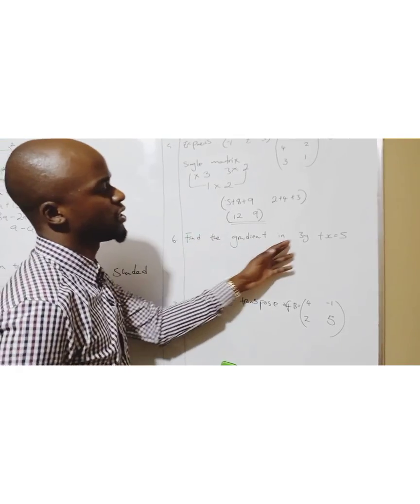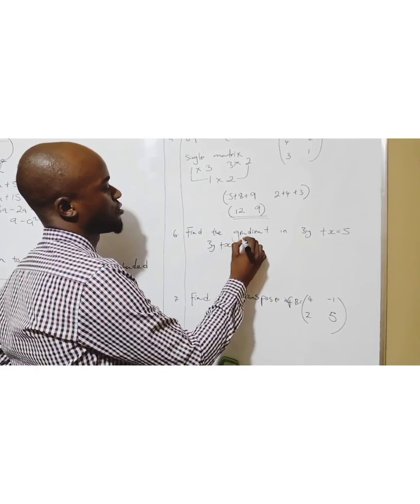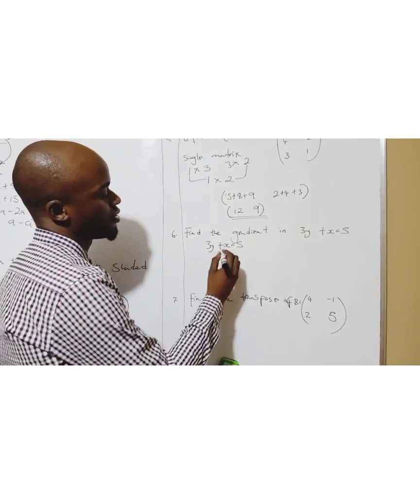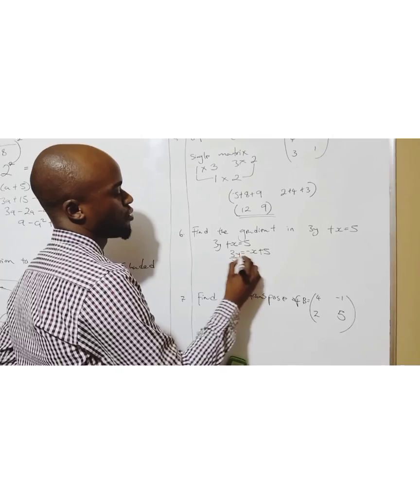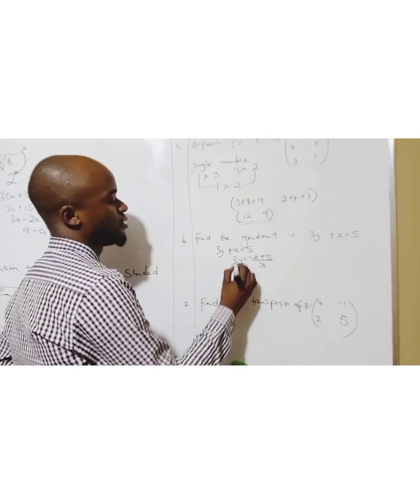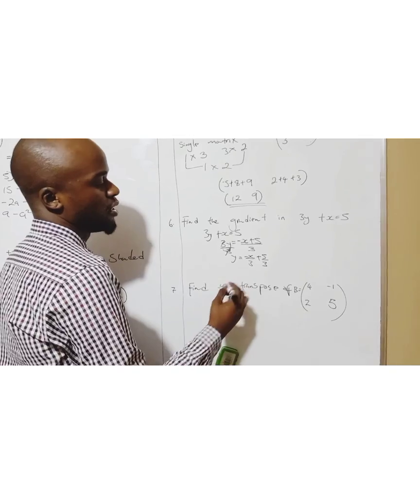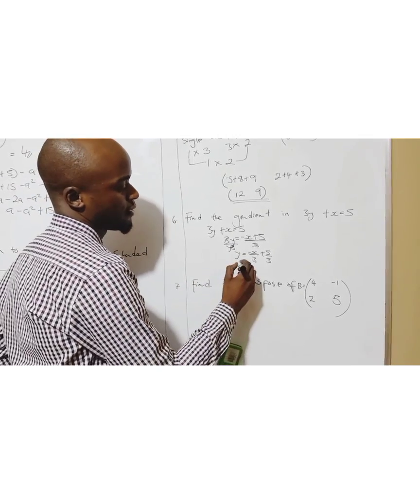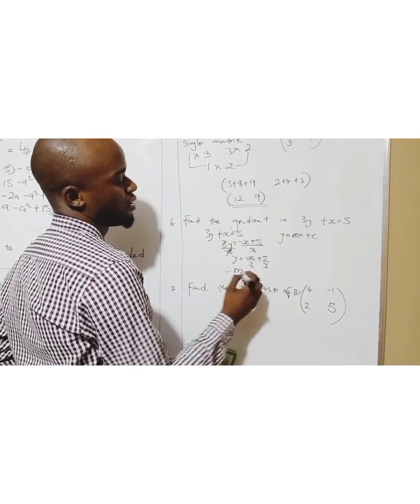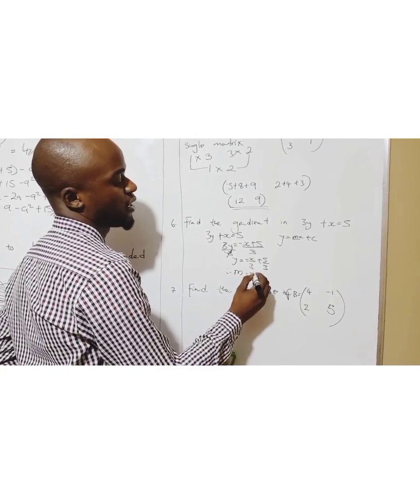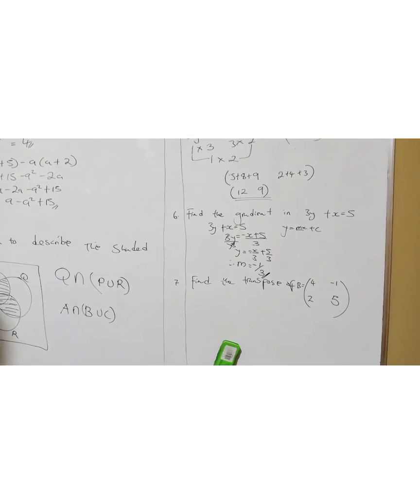Question six: find the gradient in 3y + x = 5. What you have to do is make y the subject. So I'm going to have 3y equals negative x plus 5, then divide by 3. So y equals negative x over 3 plus 5 over 3. Your gradient is the number before x. So m is negative one over three. That's your gradient.